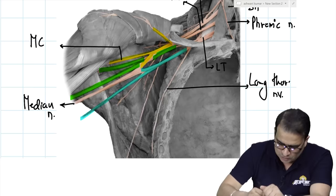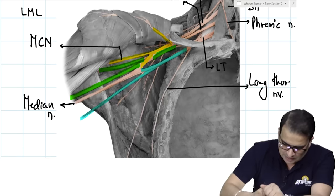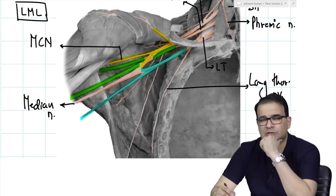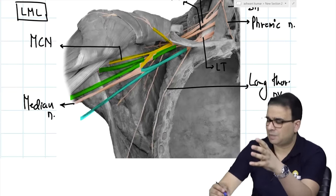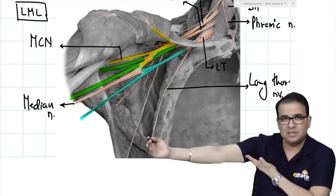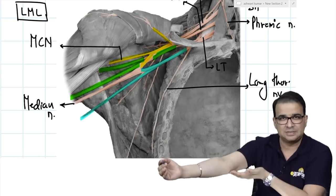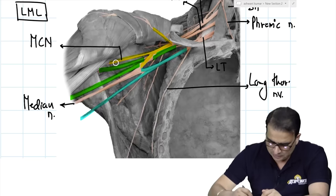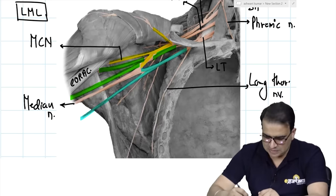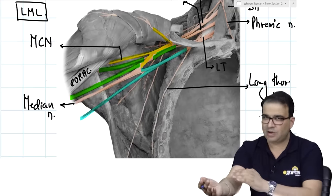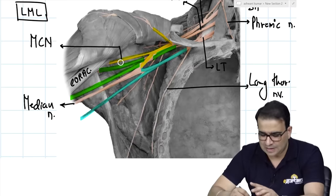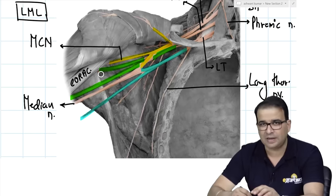The musculocutaneous nerve is the major nerve supplying muscles in the anterior compartment of the arm. It enters the arm by piercing the coracobrachialis muscle and then runs between biceps and brachialis. You can see this nerve piercing the coracobrachialis muscle — that is the coracobrachialis. Do not confuse it with another nearby nerve that is not piercing this muscle but going through the quadrangular space — that is a different nerve.